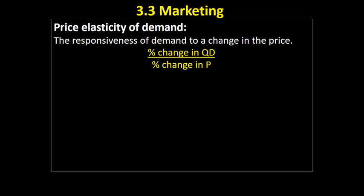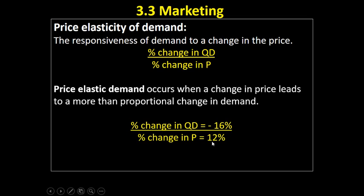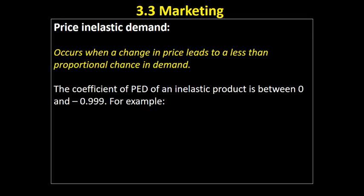Price elastic demand is the opposite - it occurs when a change in price leads to a more than proportional change in demand. For example, if we increase our price by 12% and the quantity demanded falls by 16%, there is a greater proportional change in demand. That gives us a price elasticity of demand of minus 1.33 (-16 divided by 12 = -1.33).